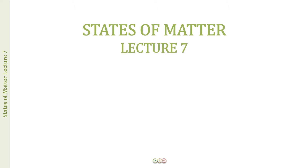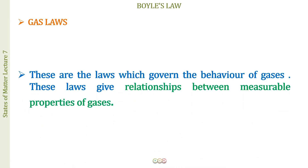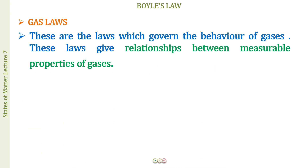These four measurable properties of gases, they are interdependent and they describe the state of the gas. There are going to be certain laws which show us how these measurable properties are interdependent. These laws are known as the gas laws. They are the laws which govern the behavior of gases and give the relationship between the measurable properties — mass, volume, pressure and temperature — and how they are related to each other.